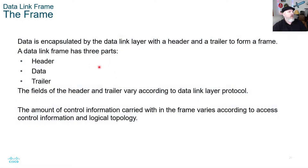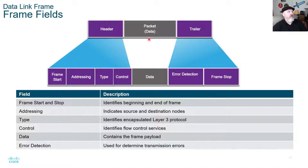The data link frame: the data link layer encapsulates data with a header and a trailer to form a frame — a term you will see on exams. The frame has three parts: a header, data, and a trailer. The fields within the header and trailer vary according to the data link layer protocol and access control information. Within the frame: the frame start and stop identify the beginning and end; addressing indicates source and destination nodes; the type identifies the encapsulated layer 3 protocol; control identifies flow control services; data is your payload; and error detection identifies transmission errors.